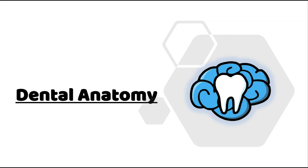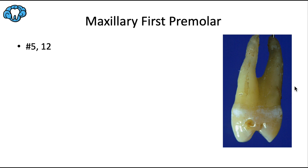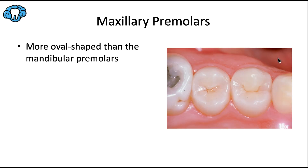Welcome back to our dental anatomy series. In this video we're going to talk about the maxillary first premolar — the largest of all the premolars, numbered tooth 5 and 12 in the universal system. Maxillary premolars are more oval-shaped from this view, whereas mandibular premolars are more circular or round.